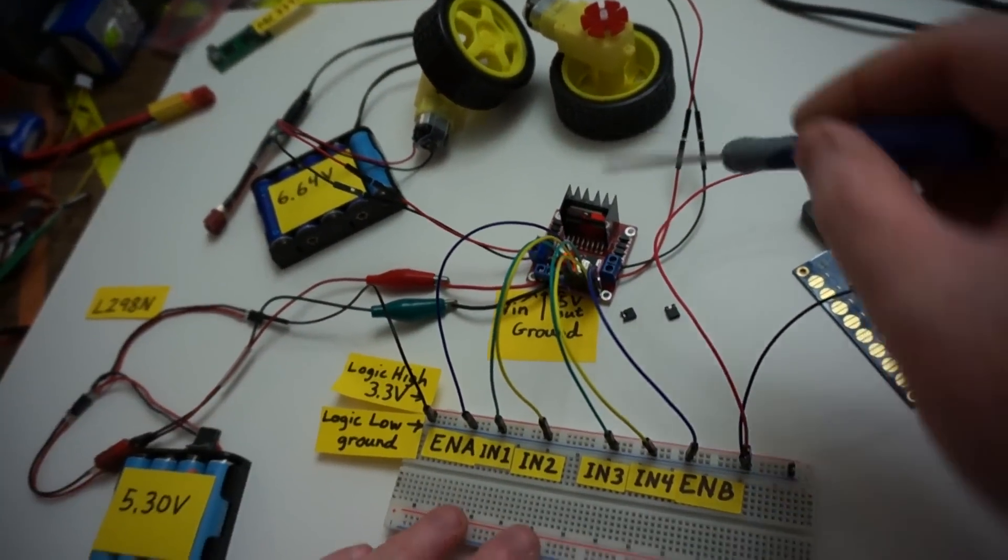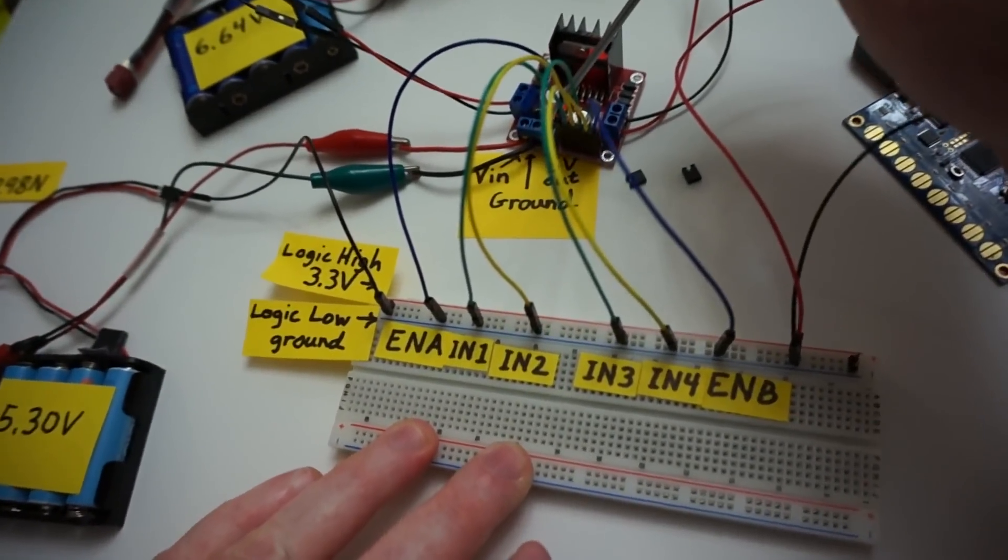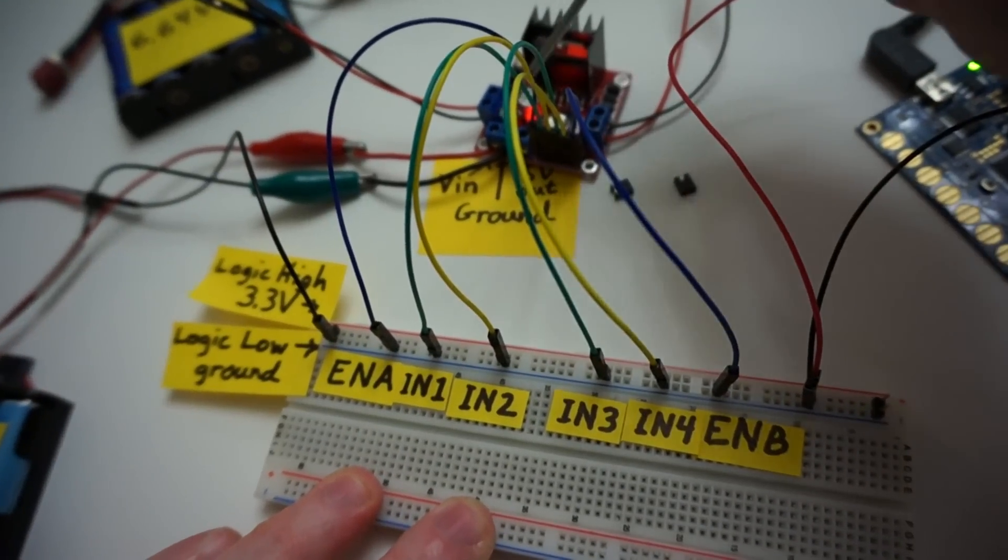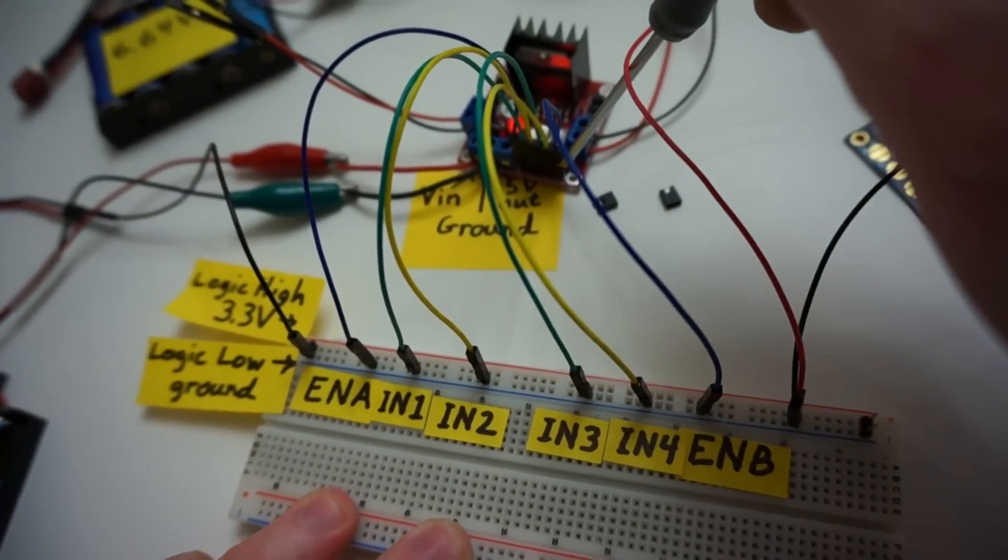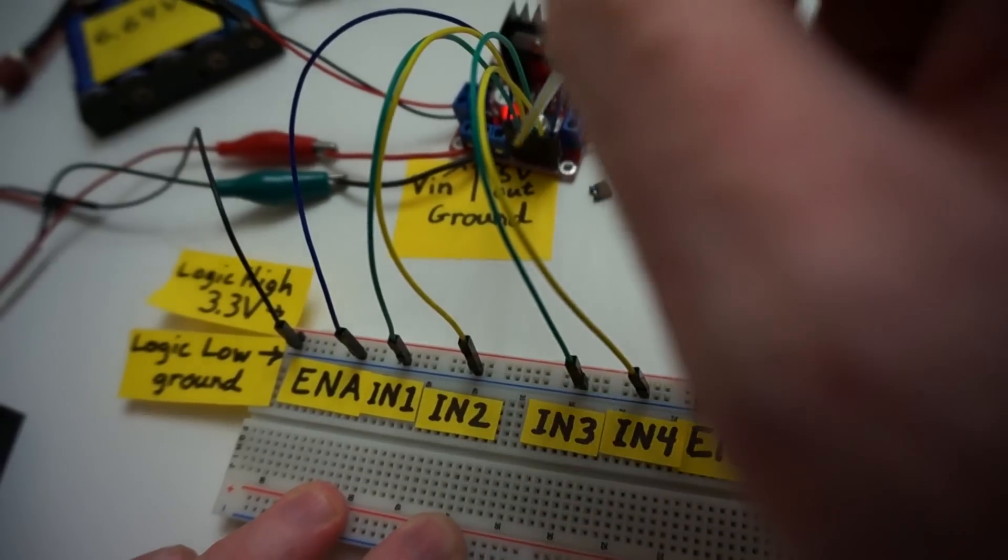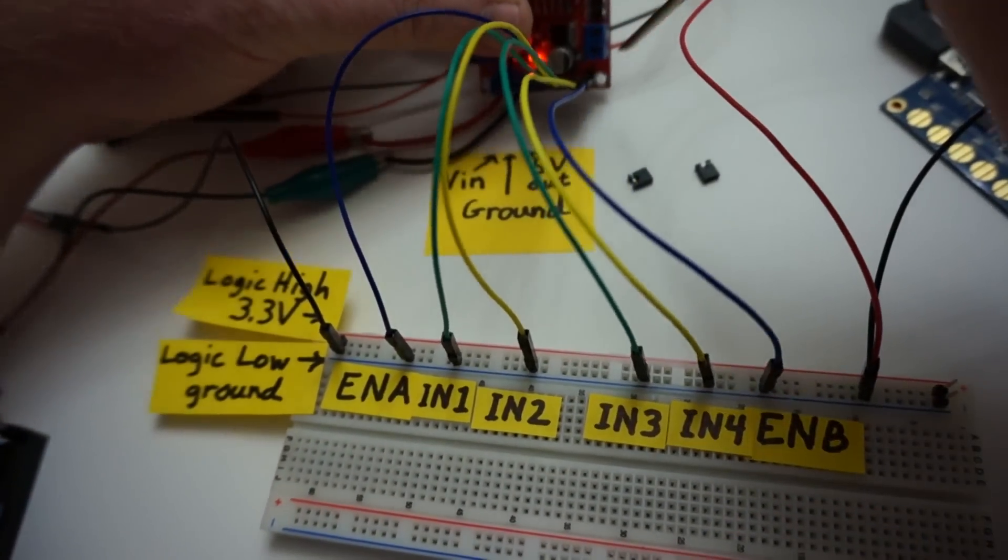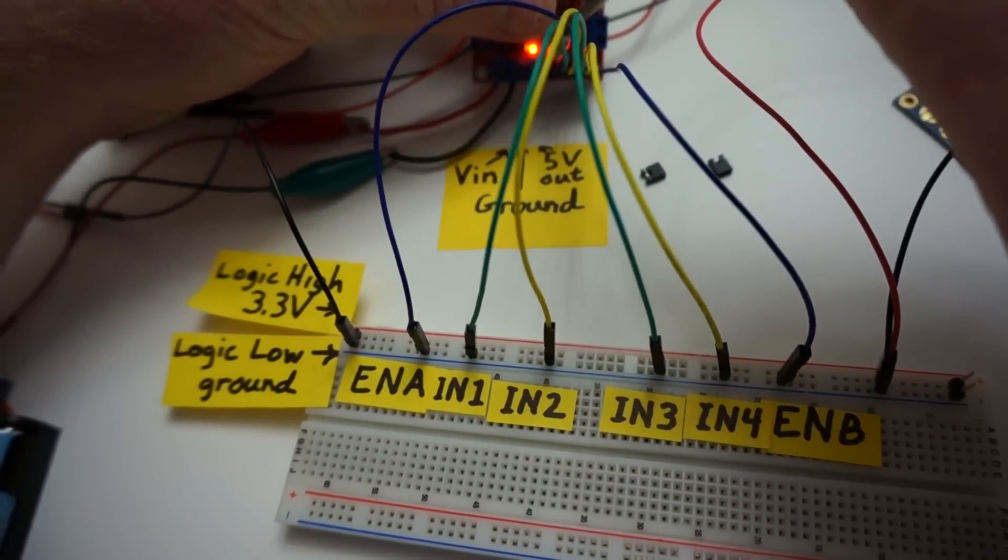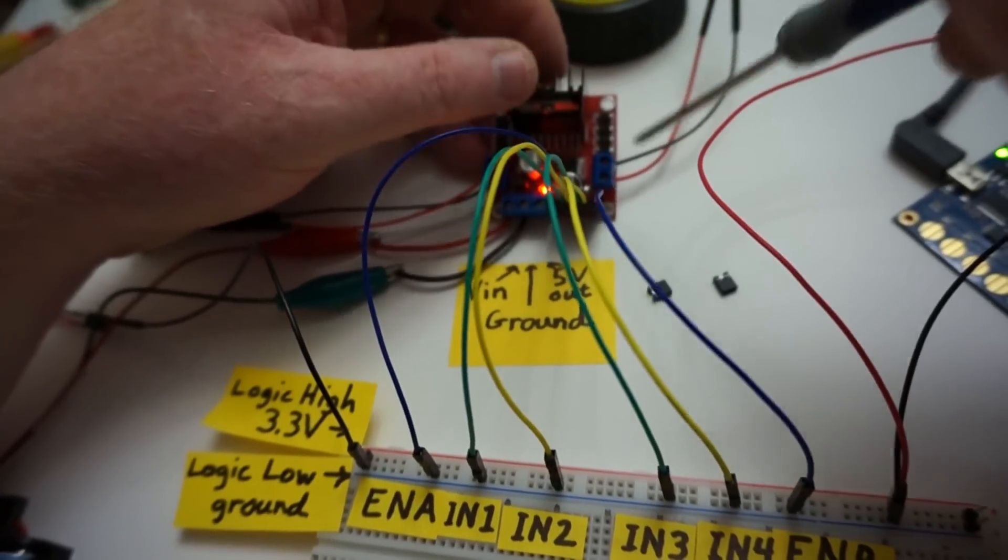And so here we have the logic pins across here. Okay, there's enable on either end, enable A, enable B, and then we have the direction pins in between. Now the two pins behind the enable are not enable pins. Those are five volt out. This little board has a five volt regulator.